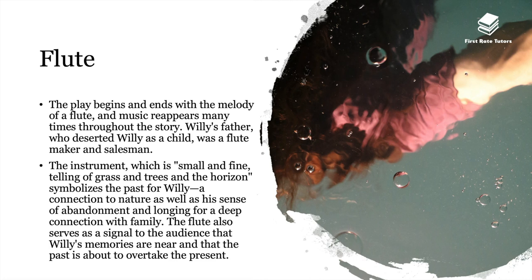The flute is another important symbol. The play begins and ends with the melody of a flute, and the music reappears many times throughout. Willy's father, who deserted Willy as a child, was a flute maker and salesman. The instrument — small, fine, telling of grass and trees on the horizon — symbolises the past for Willy: a connection to nature as well as a sense of abandonment and longing for a deep family connection. The flute also serves as a signal to the audience that Willy's memories are near and that the past is about to overtake the present.